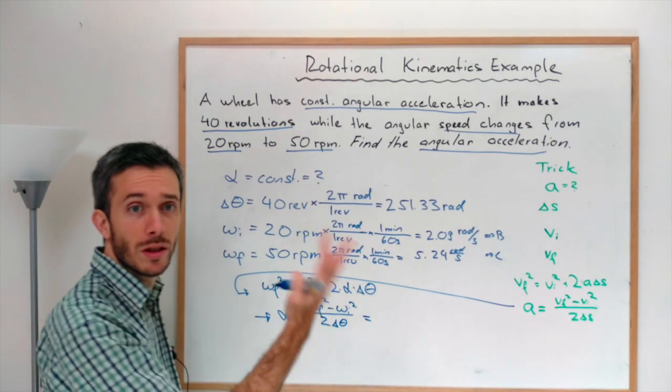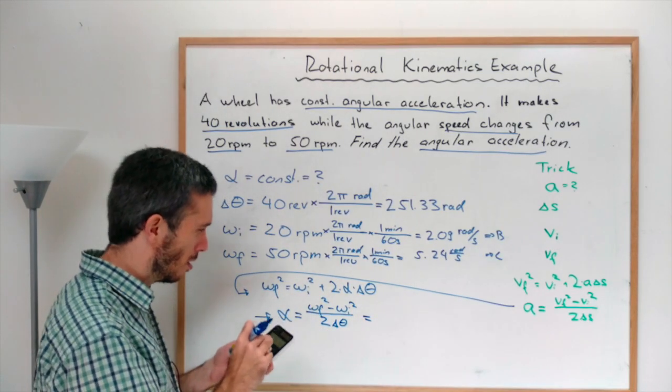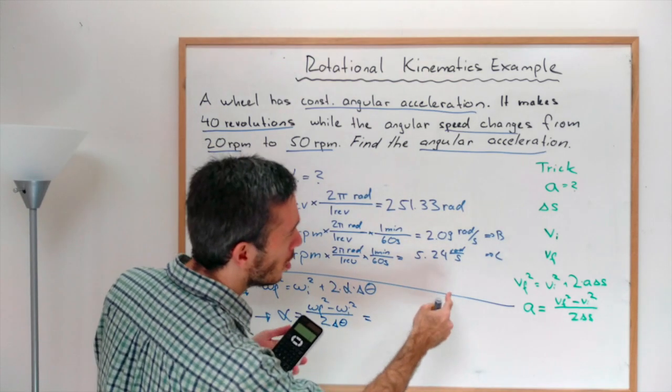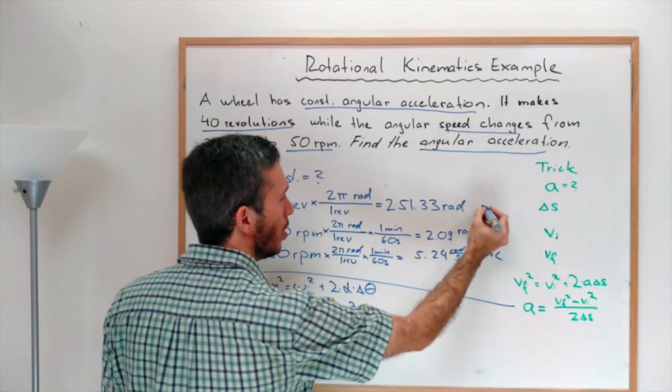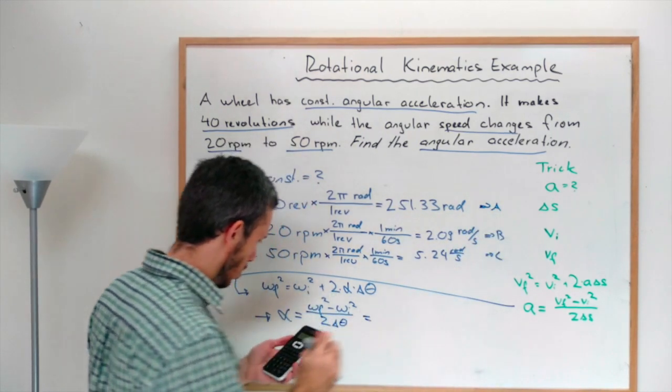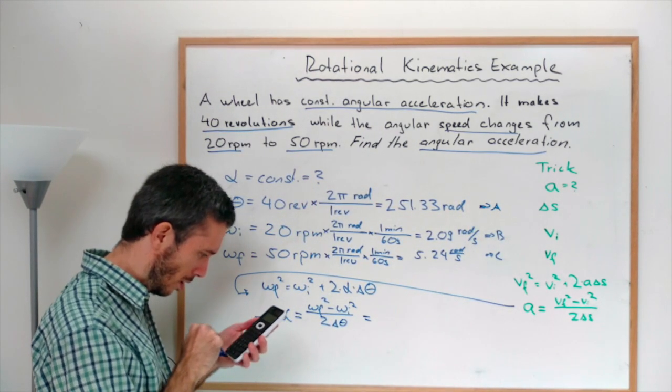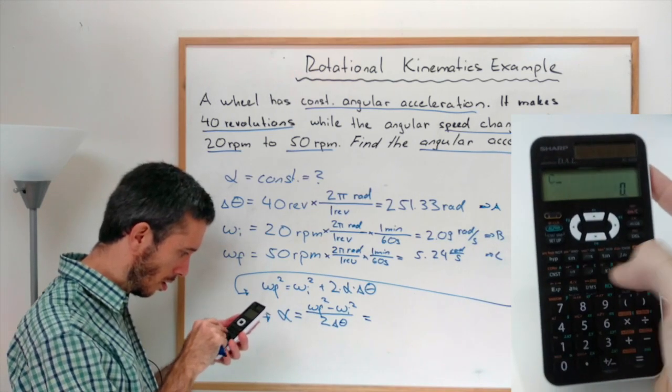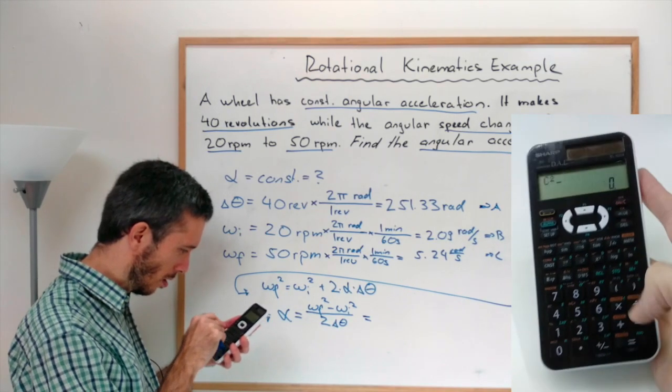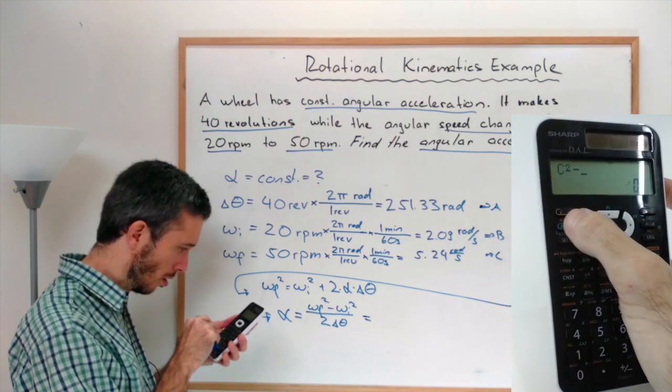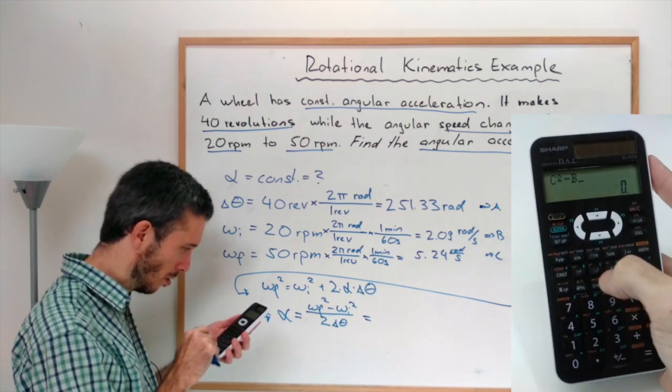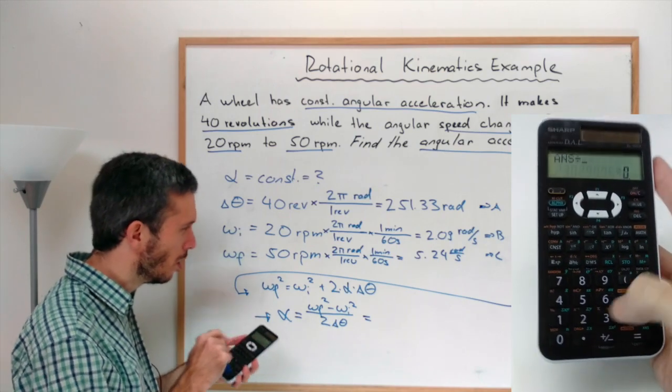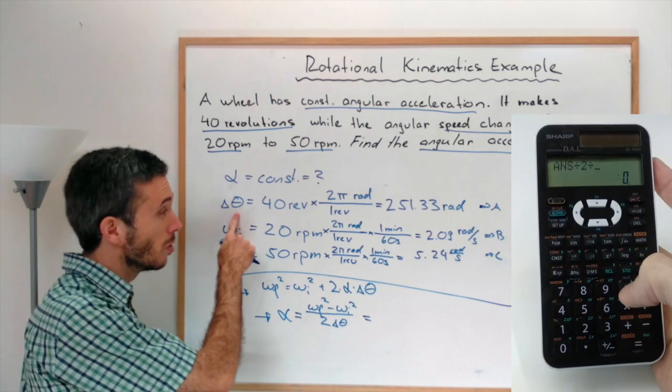Now all I have to do is type this in my calculator. So my final, I had stored in C. So in my case, the omega final squared minus omega initial squared divided by 2, divided by 2, divided by the change in position.